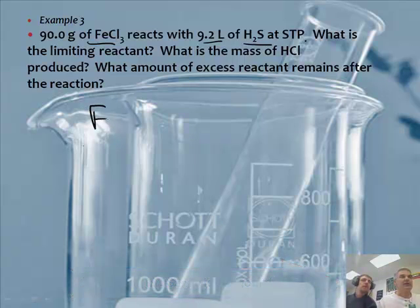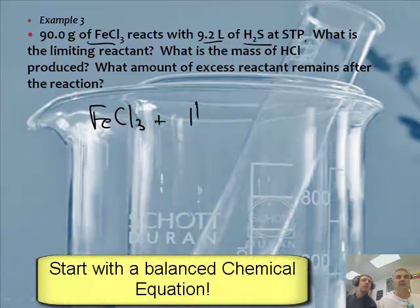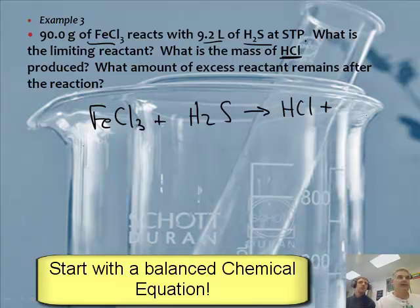We've got to write a balanced equation. So we'll say FeCl₃ plus H₂S — those are the two chemicals. And it's going to form HCl as one of the products. So the H goes to the Cl.